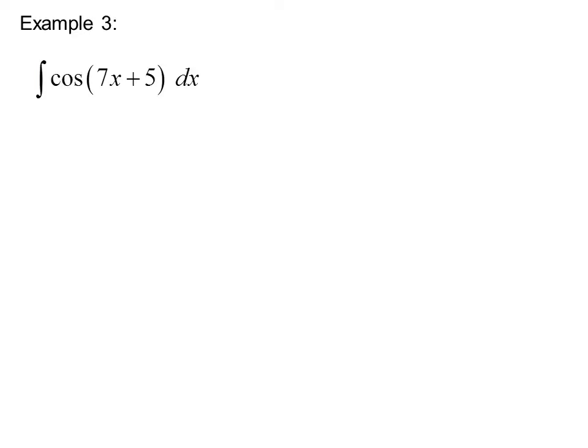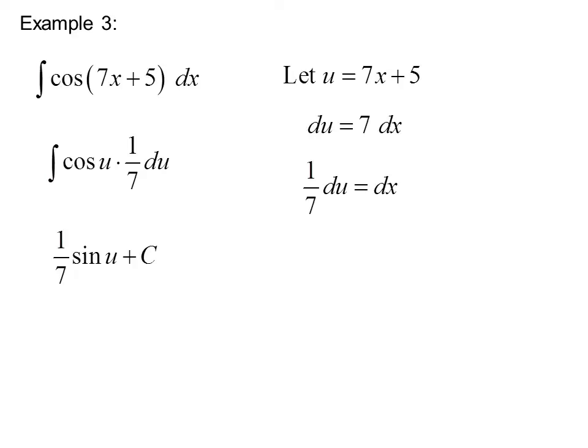Example 3. The integral of cosine 7x plus 5 dx. We try letting u equal 7x plus 5. So du equals 7 dx. 1 seventh du equals dx. Now we can substitute. The integral of cosine u times 1 seventh du. The antiderivative of cosine is sine. And the 1 seventh can come out front. So we get 1 seventh sine u plus c. Or 1 seventh sine 7x plus 5 plus c.